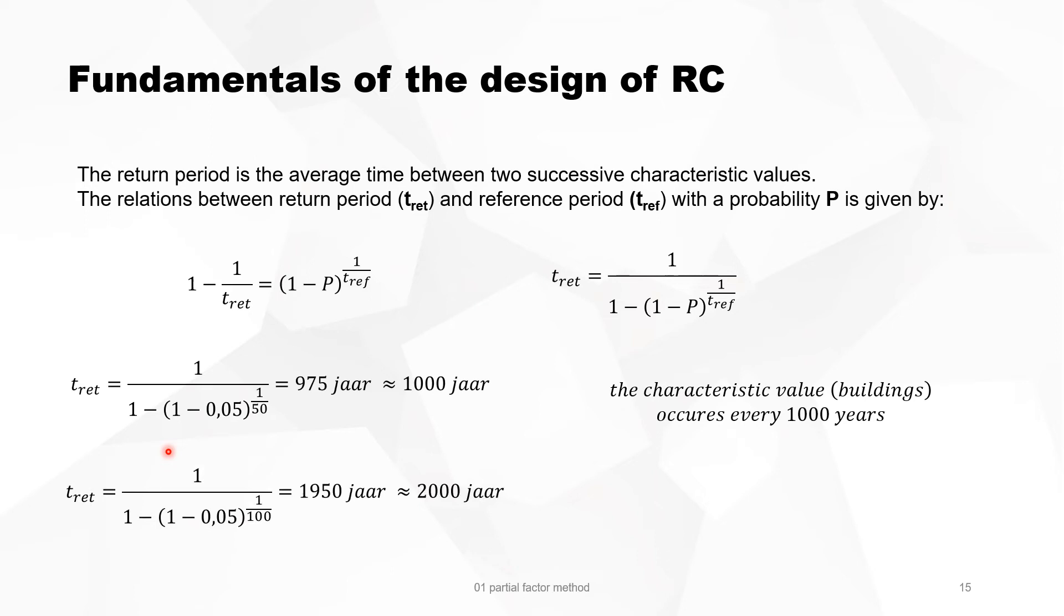If you compare it with bridges, you have a characteristic value with a probability of 5% or 95% exceeding, and the return period for bridges is 100 years. Then you arrive at a return period of 2000 years.